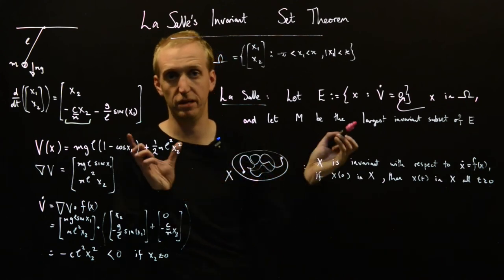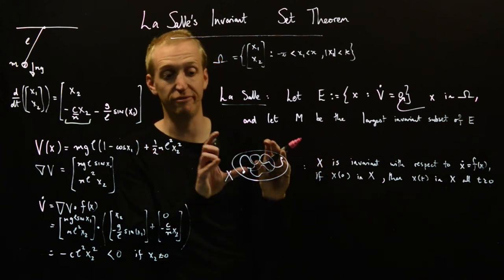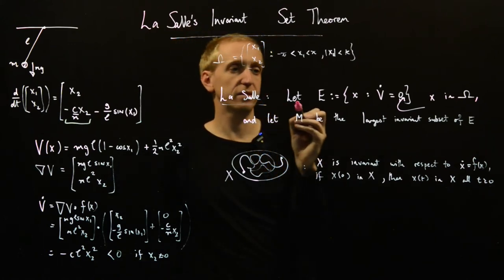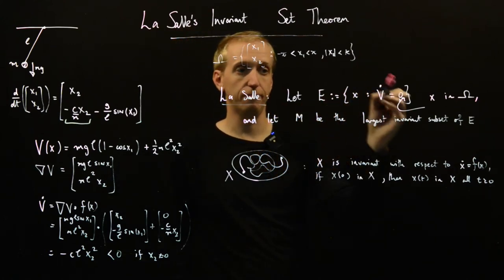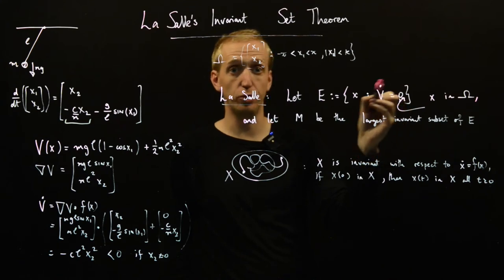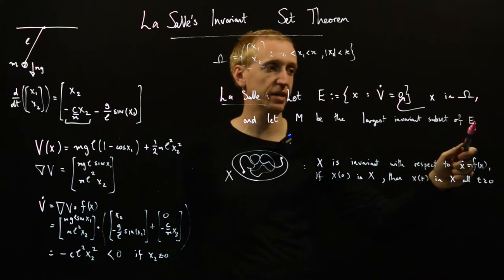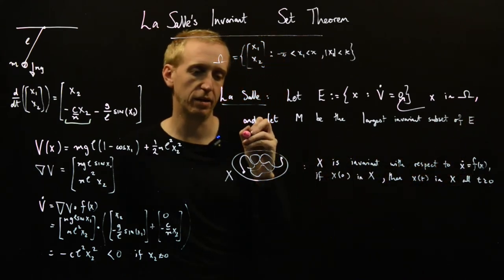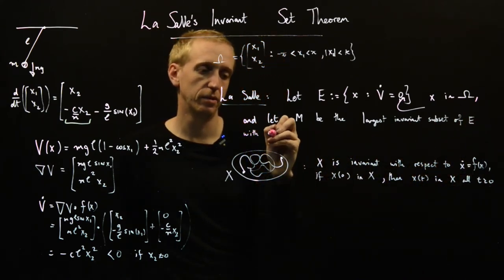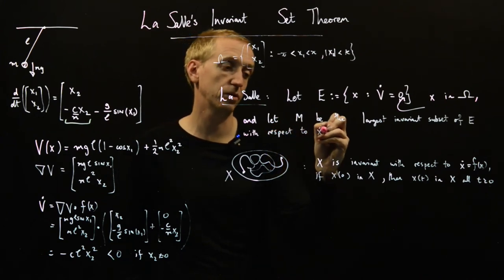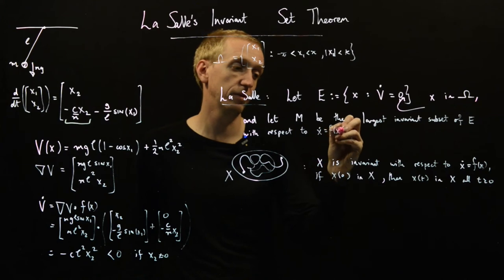So X would be invariant with respect to a particular set of dynamics if no matter where I start, if I evolve my system over time, it would never leave that set X. So given our set of points where our strict Lyapunov inequality is not satisfied, let M be the largest invariant subset of E with respect to x dot equals f of x.